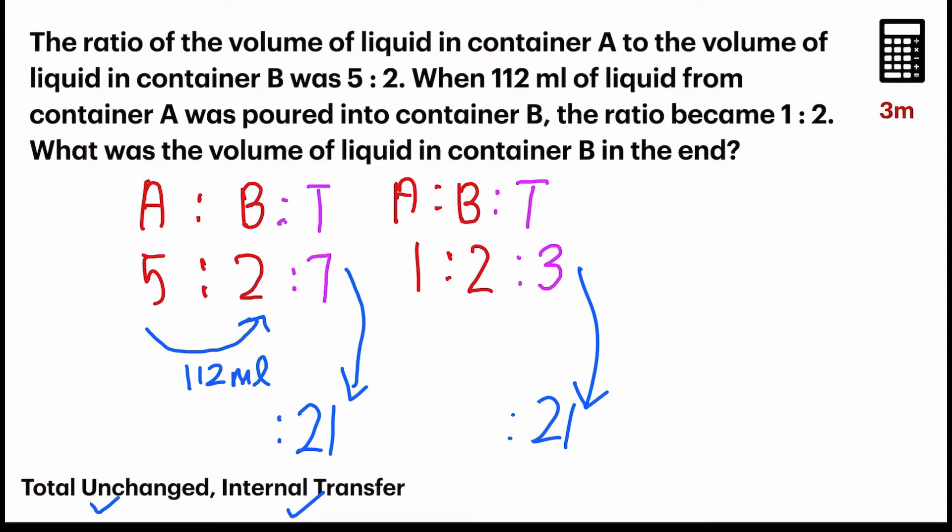For the ratio on the left-hand side, we need to multiply by 3. 7 times 3 gives me 21. 2 times 3 gives me 6. 5 times 3 gives me 15. For the ratio on the right-hand side, I need to multiply by 7. 3 times 7, 21. 2 times 7, 14. And 1 times 7, 7.